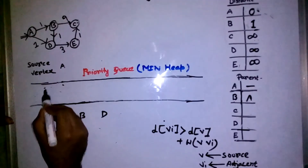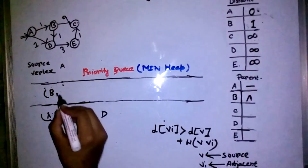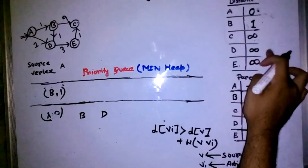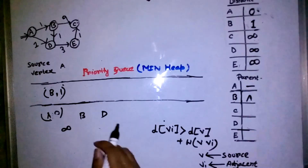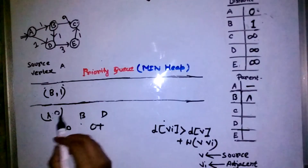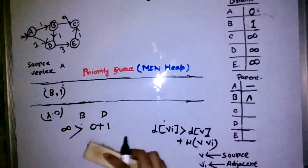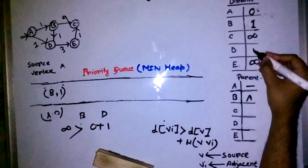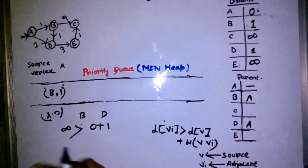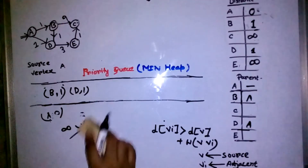I add B to the priority queue with priority one. Now checking D: distance to reach D is infinity, and distance to reach A is zero plus weight of edge A–D which is one. Infinity is greater than one, so I update: distance of D becomes one, and parent of D is A. I add D to the priority queue with priority one.